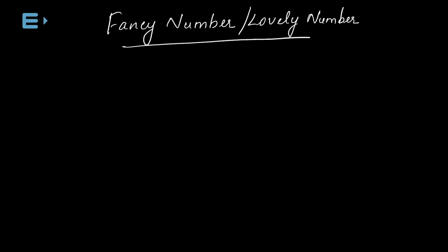Now we have a question: 13.5 × 1.6 × 0.45 × 15. If you multiply directly, we will go the same way. Now we have factors — 5 and 2 are factors. How do we multiply using these factors?